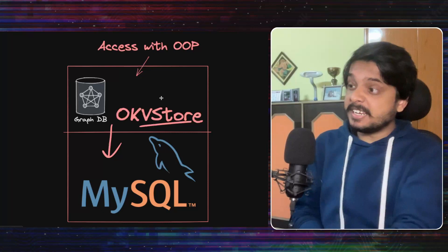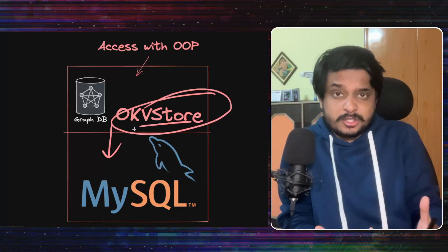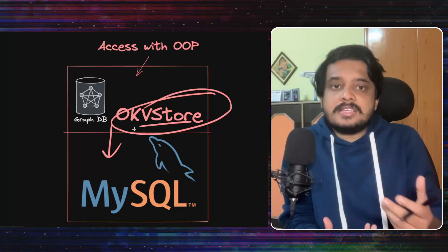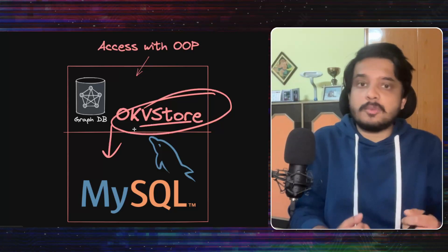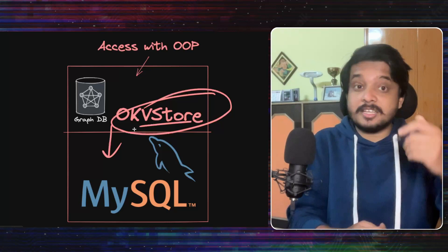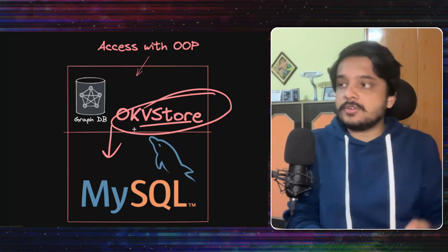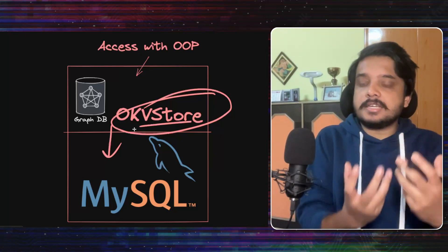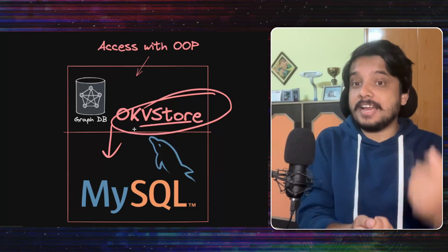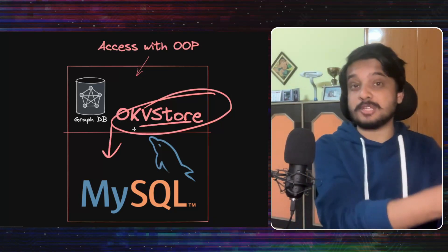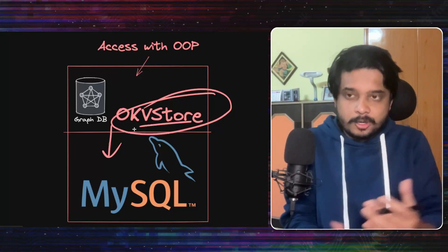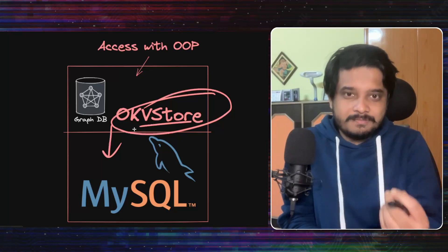To solve these problems, they created their own persistence layer called OKVStore which is like a graph database and they built it on top of MySQL. Now with this, they can access the database and query it from an object-oriented programming language. They can declaratively define the entities and their properties and access control rules very easily. The OKVStore basically gives a graph kind of interface to MySQL and graphs are easier to model with object-oriented languages by representing it with objects and relationships among them. By now, we can see that when a company has to solve problems like this on scale, there has to be a lot of deep engineering.